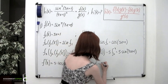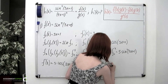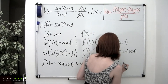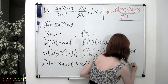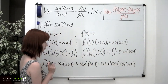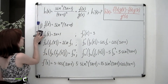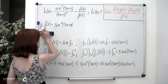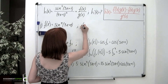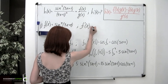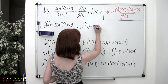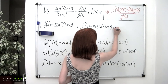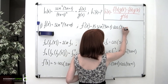Multiplying these three derivatives together according to the chain rule, we obtain f prime of x equals 15 times sine of 3x plus 1 to the fourth, times cosine of 3x plus 1.